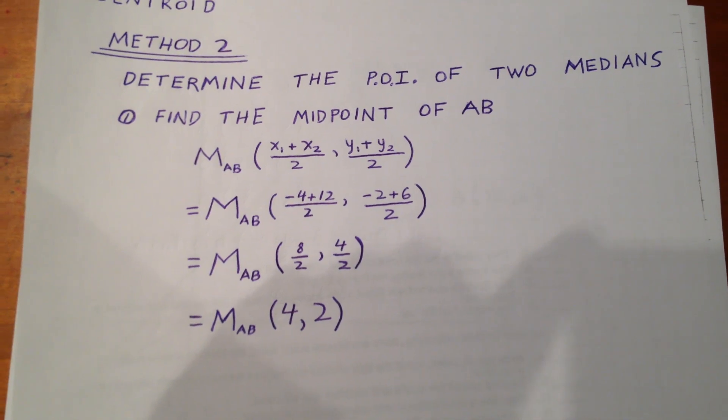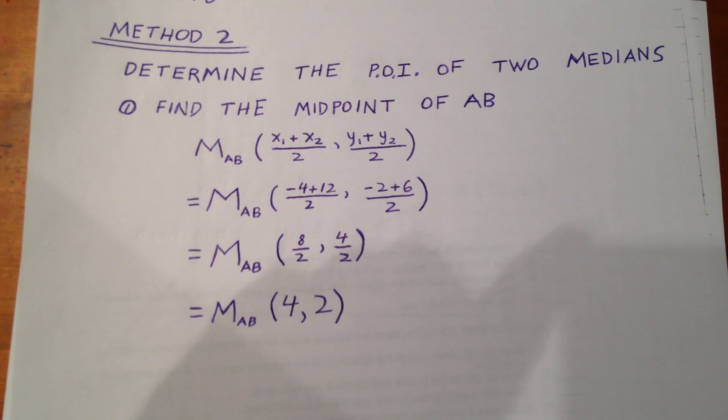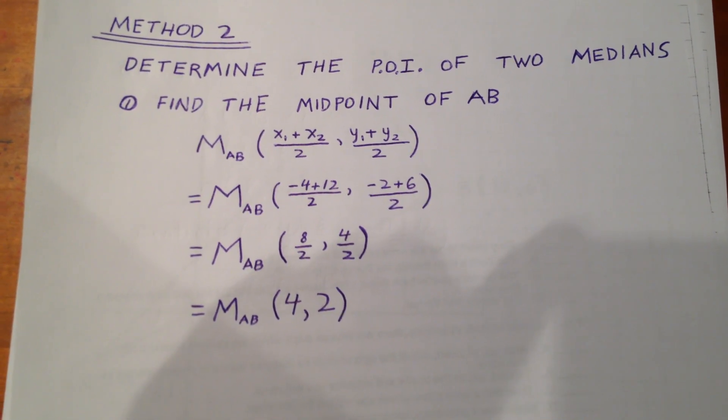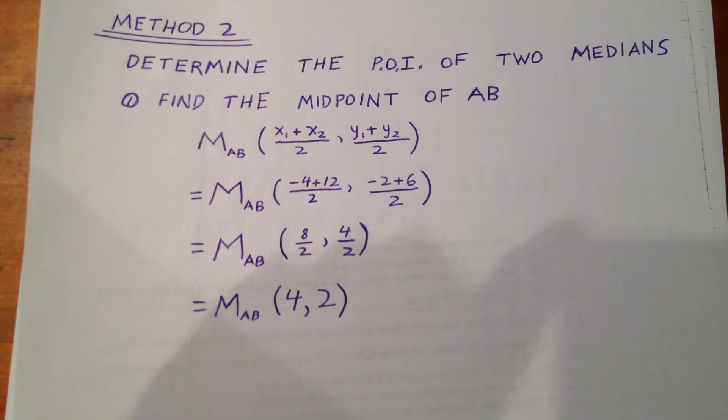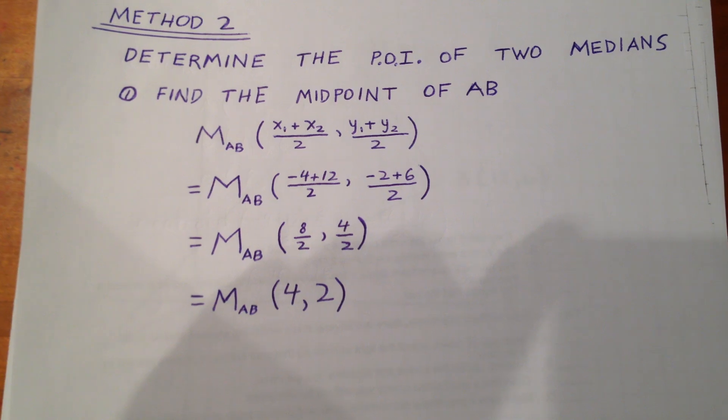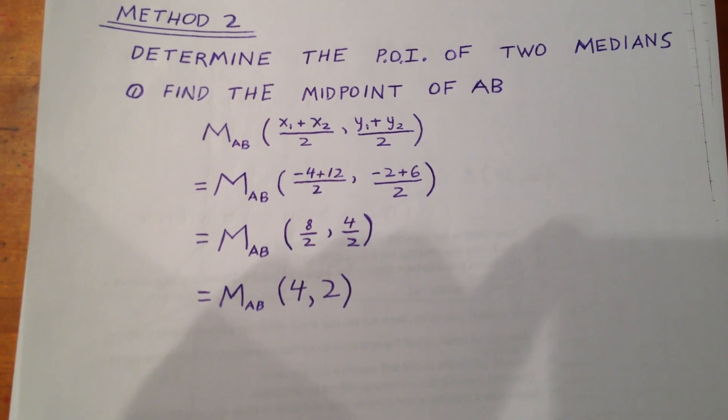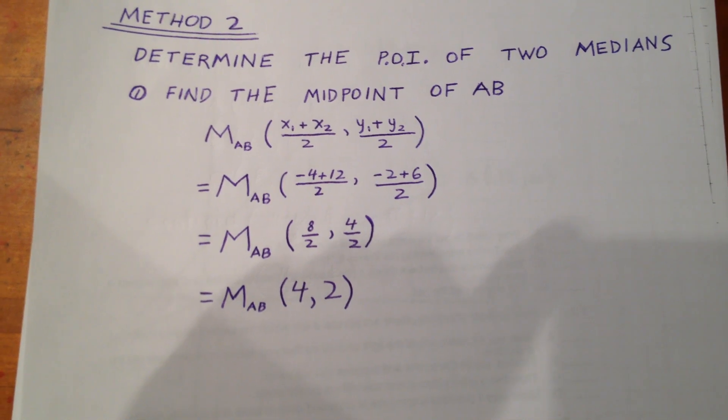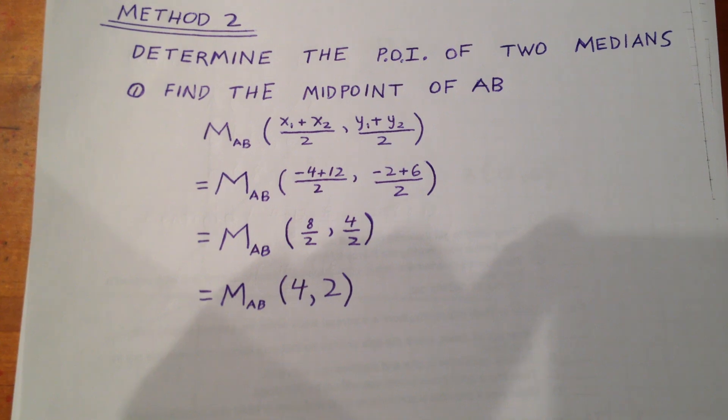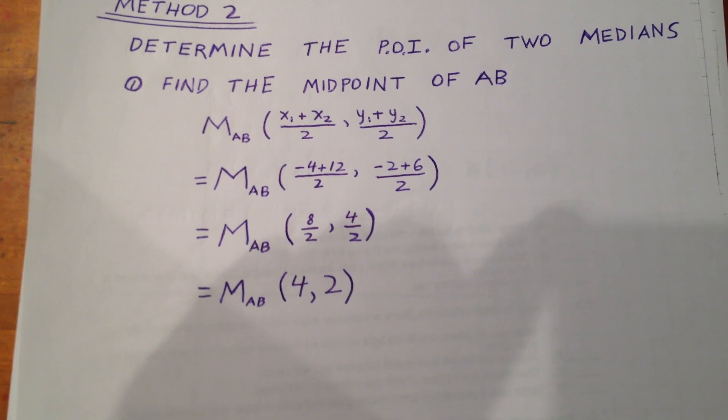Well, if you recall, point A has the coordinates negative 4, negative 2, and point B has the coordinates 12, 6. The midpoint will be x1 plus x2 divided by 2, and y1 plus y2 divided by 2. So, we end up with a midpoint of negative 4 plus 12 over 2 as our x coordinate, and negative 2 plus 6 over 2 as our y coordinate. So, our midpoint becomes 4, 2.